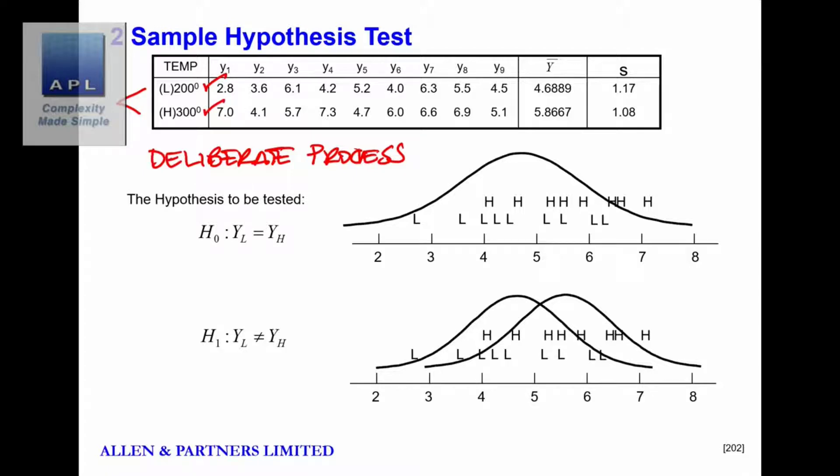The reason why we're using the t-test, of course, is because here are the two samples. Here's the sample set from the high temperature, here's the sample set from the low temperature, and there's two possibilities.